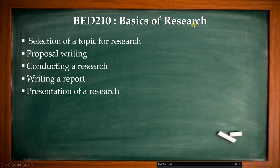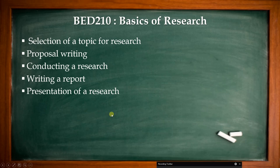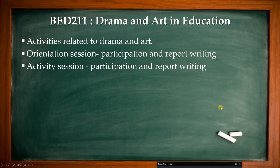BAD 209 is about understanding yourself as a person and as a teacher. There are many activities, and assessment is based on two reports: an orientation report and an activity report. A minimum of four activities — like interviews, short analyses, etc. — should be conducted. BAD 2010 is about the basics of research: you select a topic, write a proposal, conduct research in a school, write a research report, and present it to your professor in charge. Marks are based on your proposal, research report, and presentation.